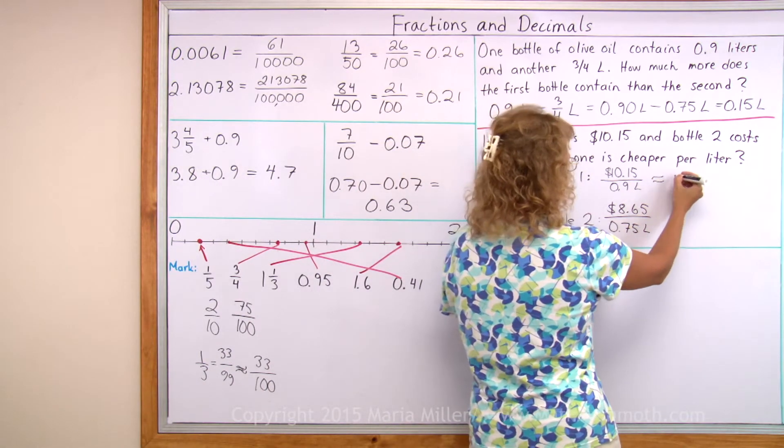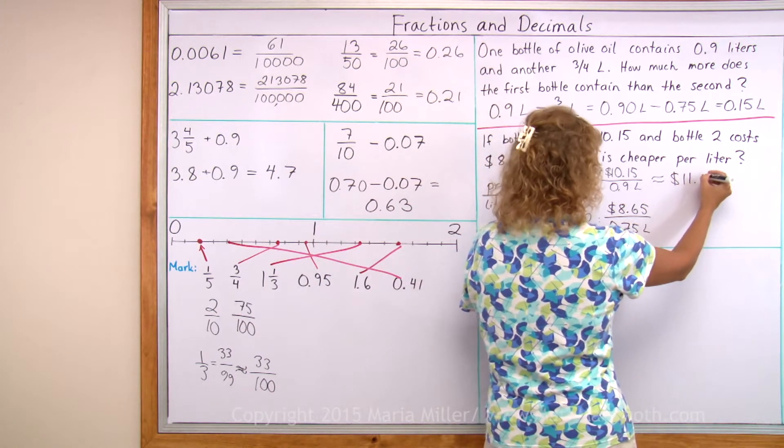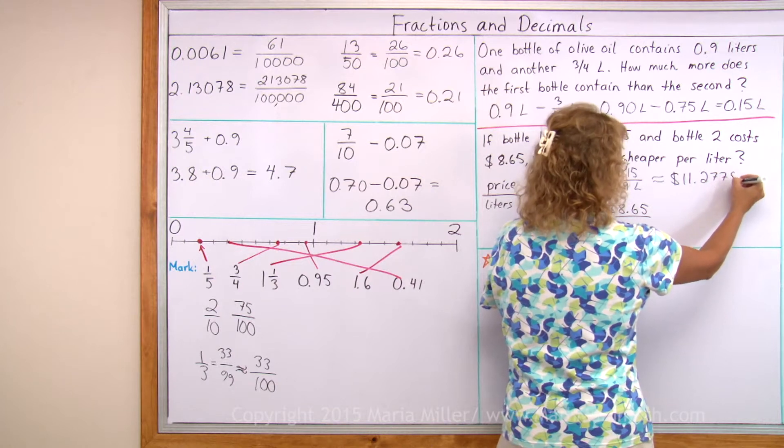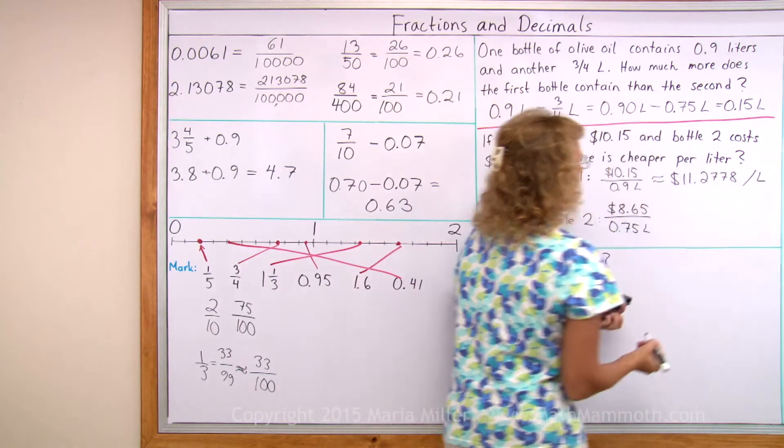Actually I need to round this, because it is a long decimal number. 11.2778. And then it would be per liter, or per liter, like that.